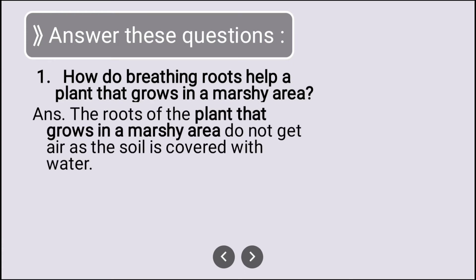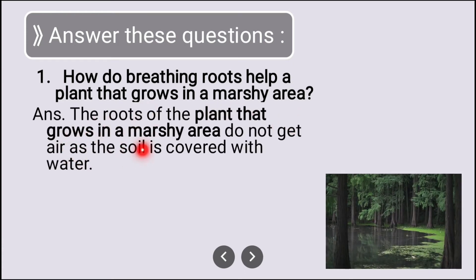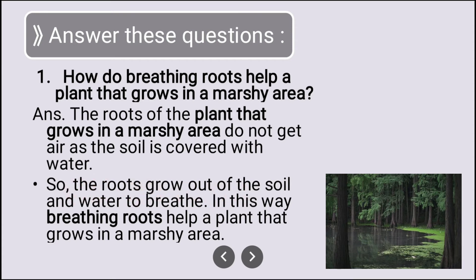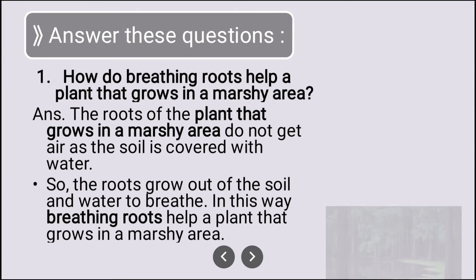How do breathing roots help a plant that grows in a marshy area? The roots of plants in marshy areas do not get air as the soil is covered with water. So the roots grow out of the soil and water to breathe. This is how breathing roots help plants that grow in marshy areas.